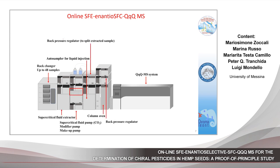The scheme of the employed instrument is here reported. Starting from the left side, you can see a rack changer where you can put up to 48 samples. Then you can see the heart of the system — the supercritical fluid extractor — with three different pumps: the supercritical fluid pump, and two additional pumps that allow modification of the extraction using a solvent with higher polarity to increase extraction of more polar components, and a third pump connected at the end of the analytical column to improve MS ionization. Then you can see a column oven, a back pressure regulator, and finally the triple-quad MS.